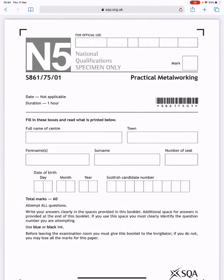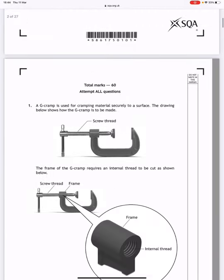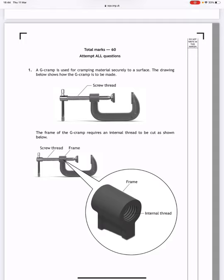In this video I'm going to walk you through the specimen paper for National 5 practical metalwork. A g-cramp is used for cramping material securely to a surface. The drawing below shows how a g-cramp is to be made.